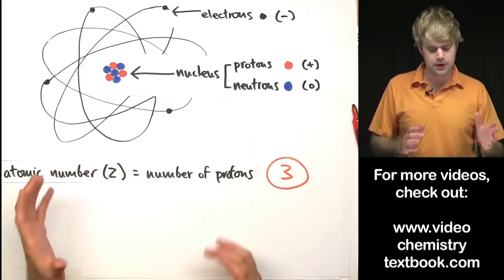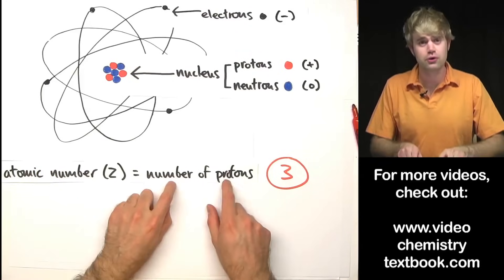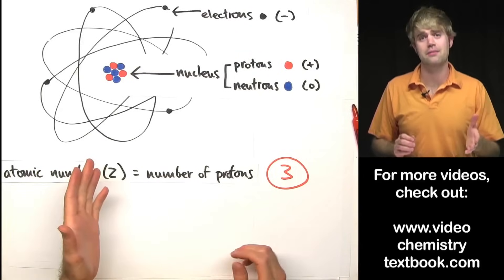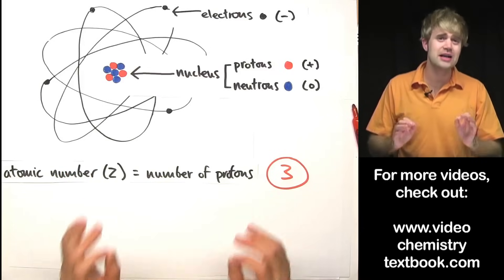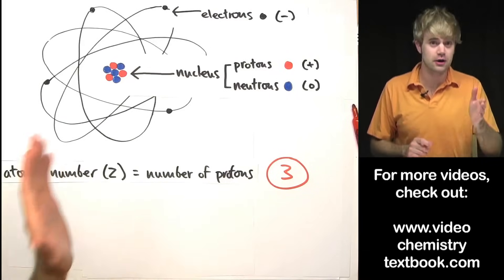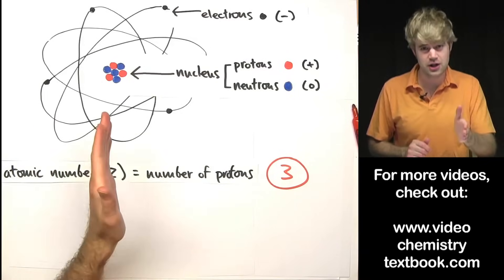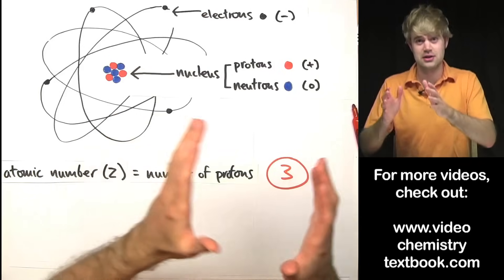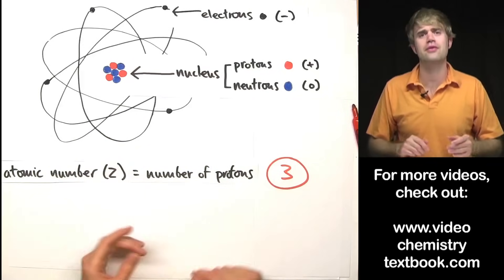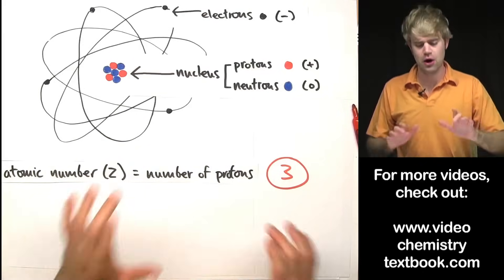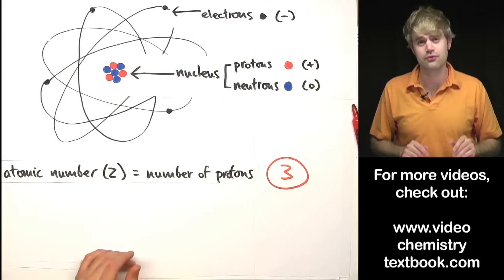Atomic number is particularly important because the number of protons in an atom tells us what kind of atom it is — whether it's a carbon atom, an oxygen atom, or a sodium atom. We're going to talk more about that in the video on isotopes, so you don't have to worry about it for right now.